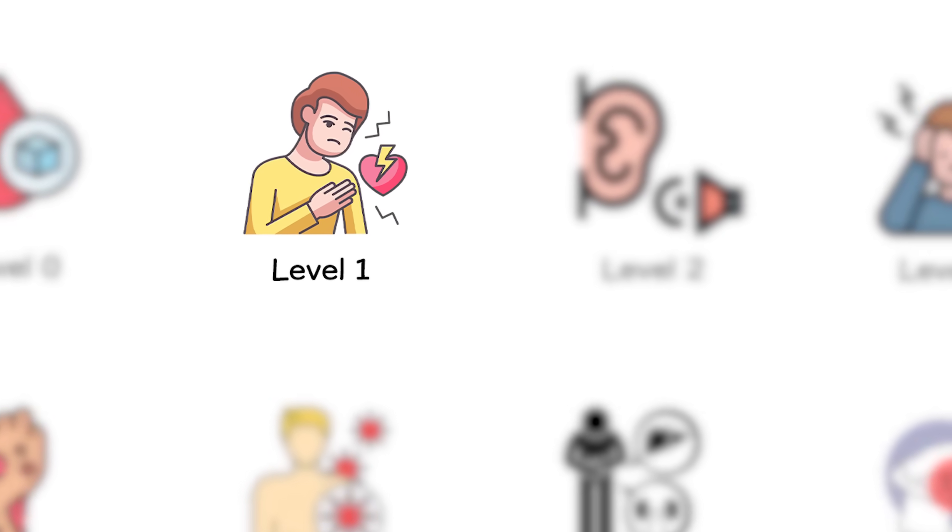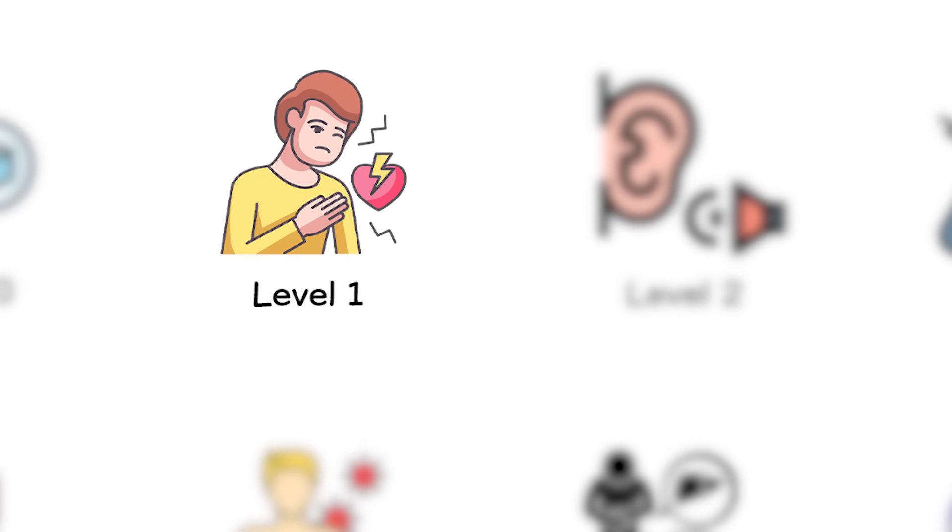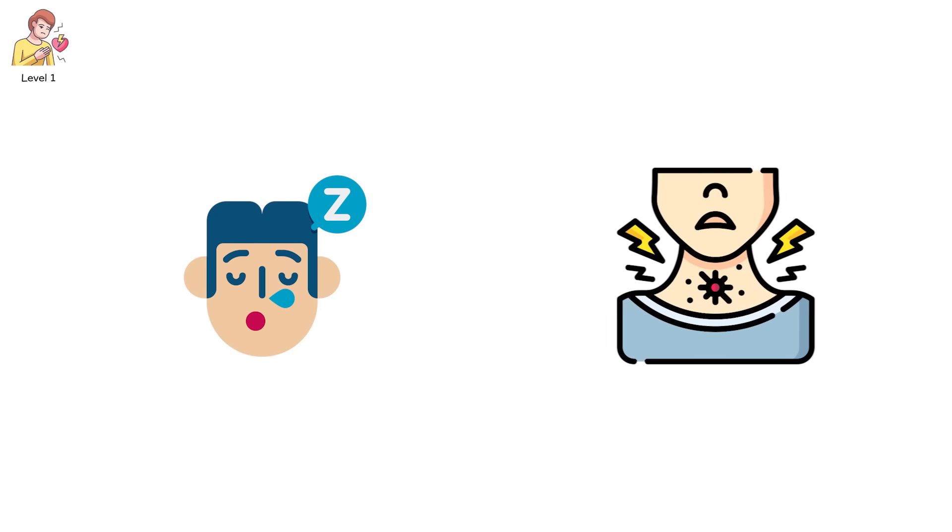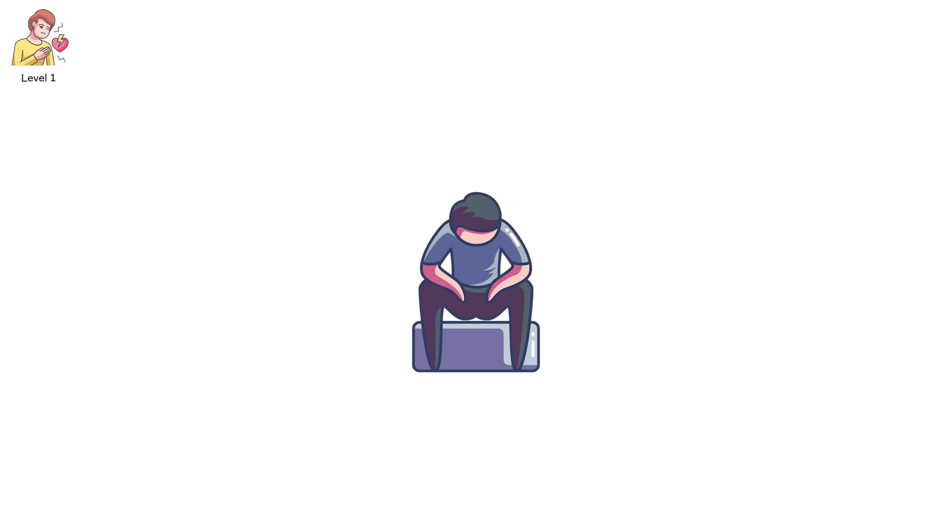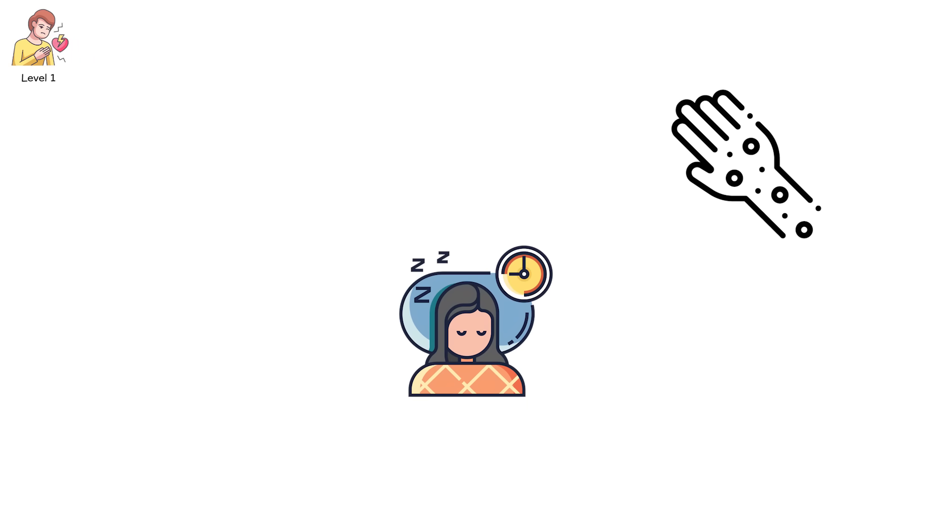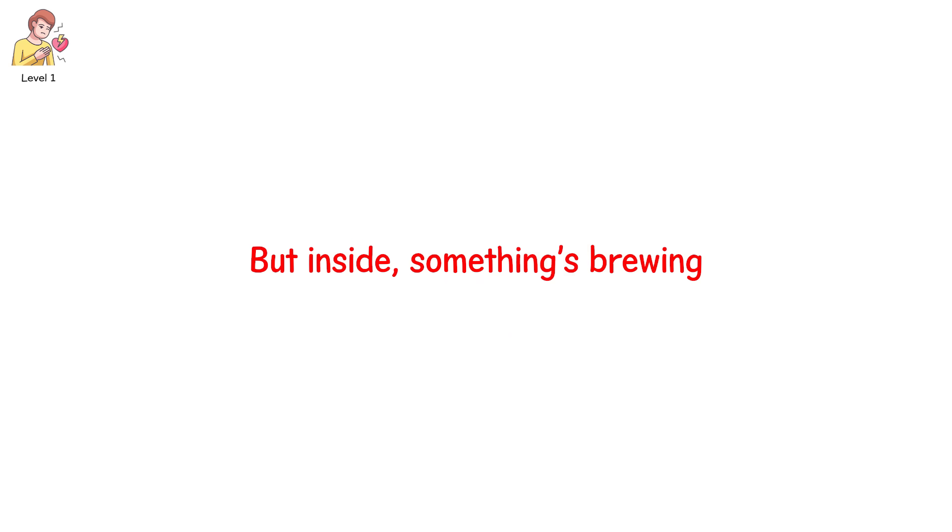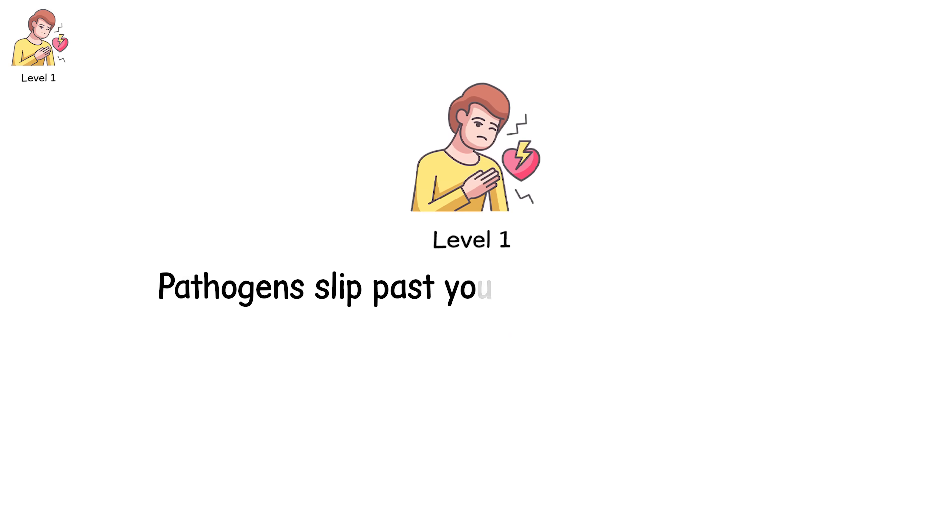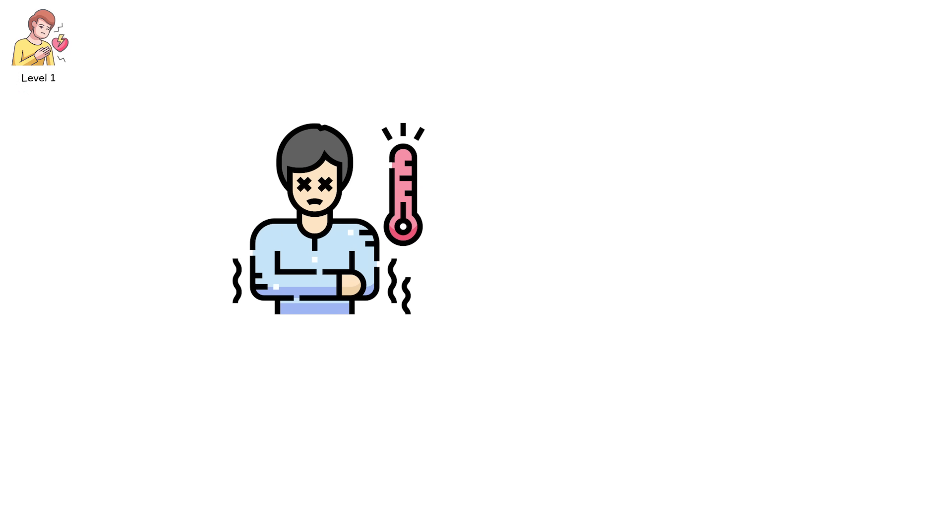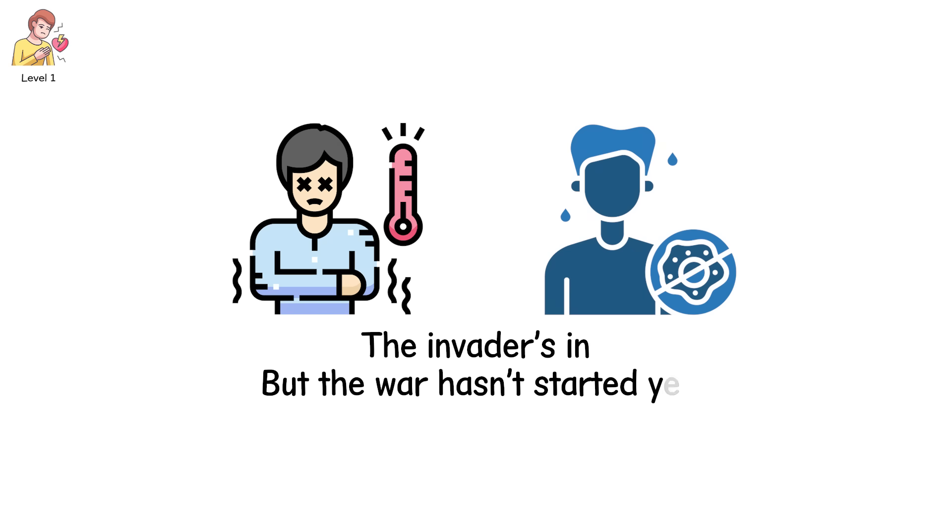Level one. Silent infiltration. You feel off. But barely. Maybe a tickle in the throat. Maybe a dull fatigue that hangs around like brain fog. But you write it off. Didn't sleep well. Allergies. Long day. You keep moving. But inside, something's brewing. Level one is where pathogens slip past your first line of defense. Maybe a cold virus made it past the mucus membranes. Maybe a food-borne bacteria snuck through your stomach acid. The invader's in.